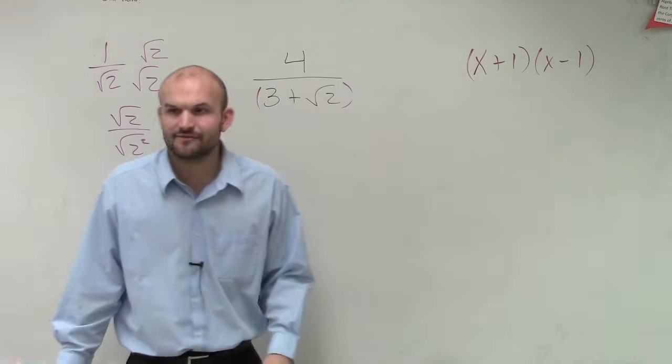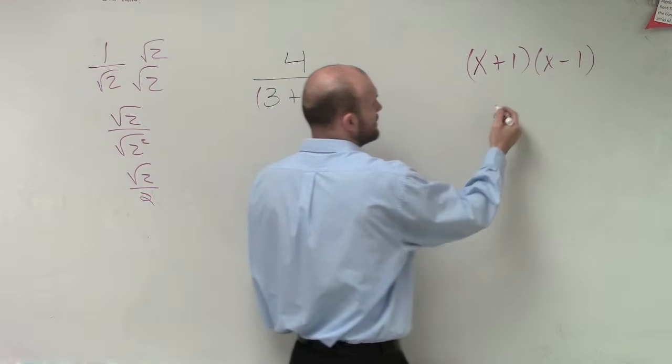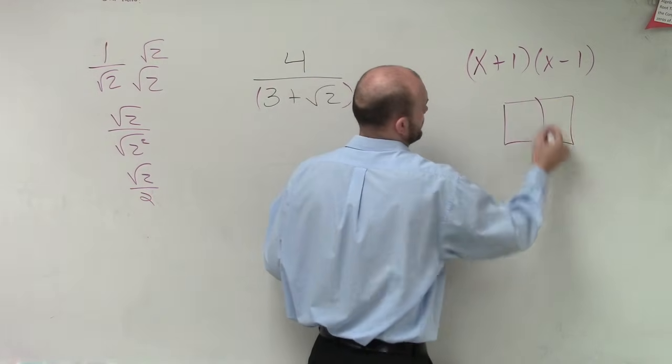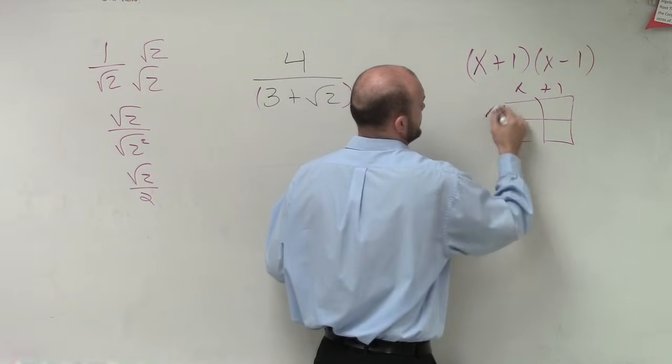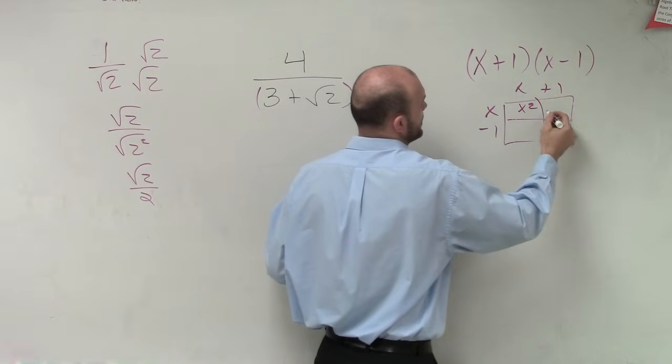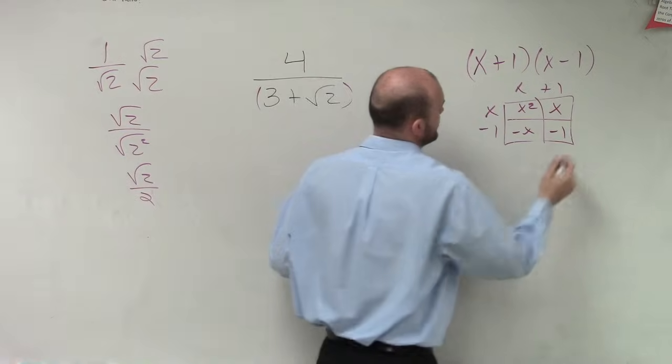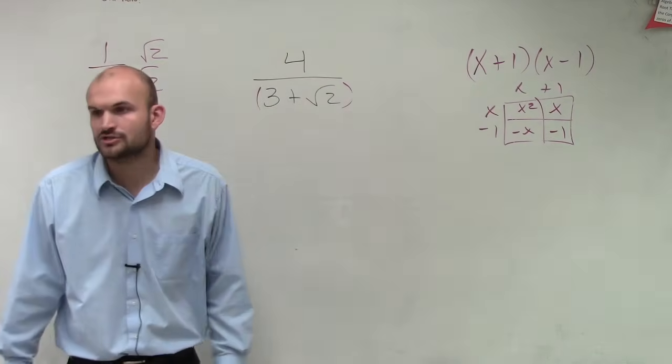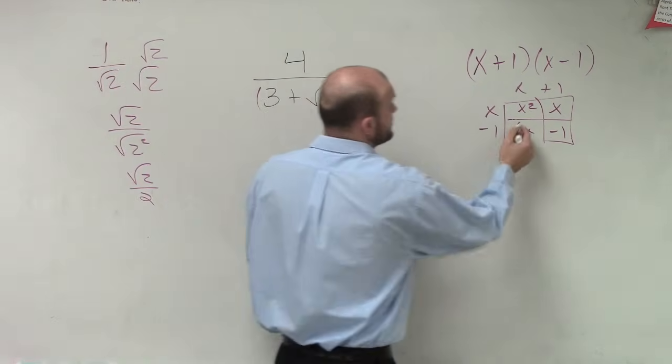And the important thing about difference of 2 squares is remember when we multiply these out, x plus 1, x minus 1, we get x squared, x negative x, negative 1, right? What happens to my middle terms? They add out to 0, right?